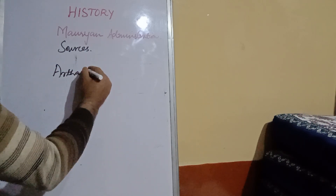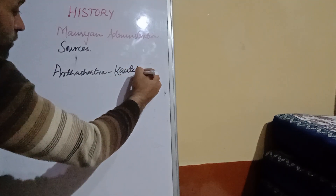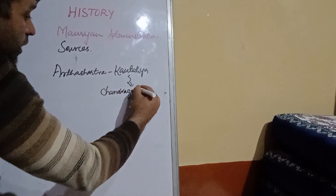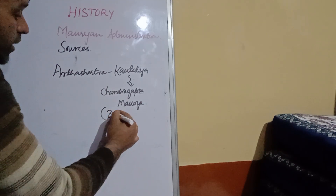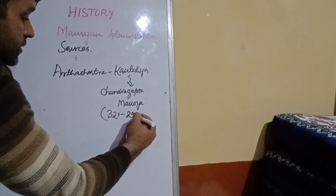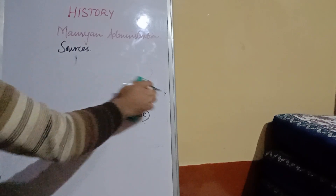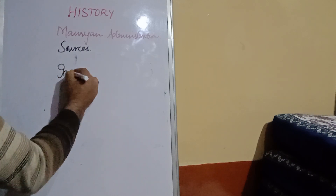The Arthashastra was one of the great books written by the famous scholar Kauṭilya. Kauṭilya lived during the reign of Chandragupta Maurya, who as we know was the founder of this Mauryan dynasty, from the period of 321 BC to 298 BC. This Arthashastra is an important source of Mauryan administration.